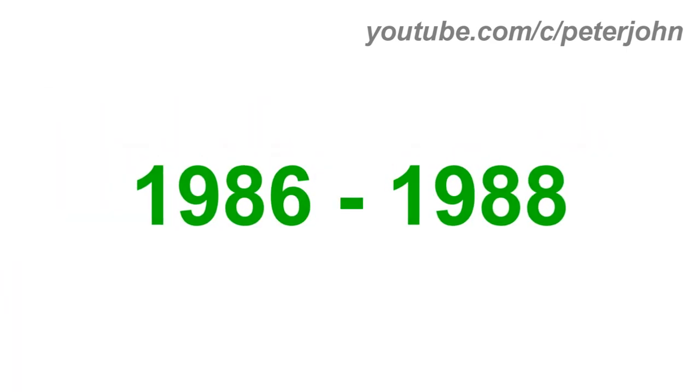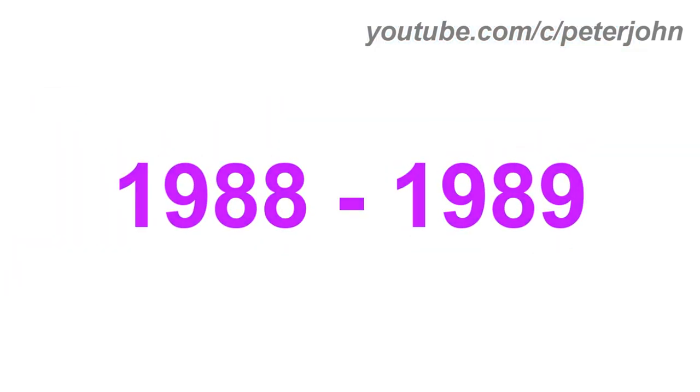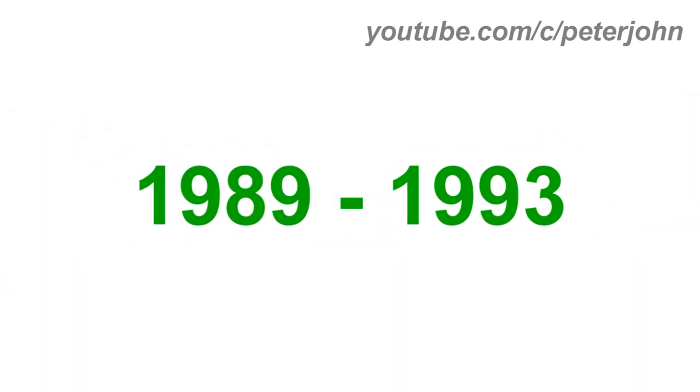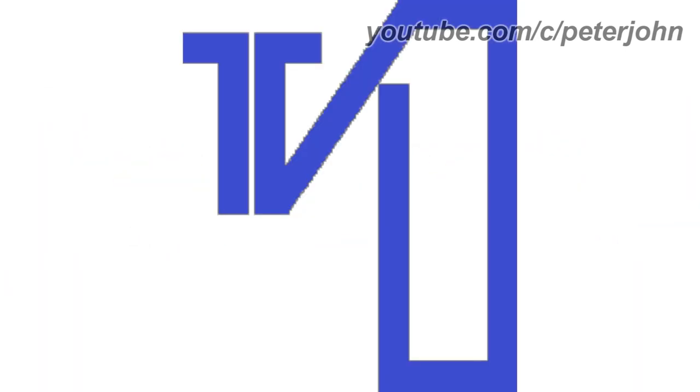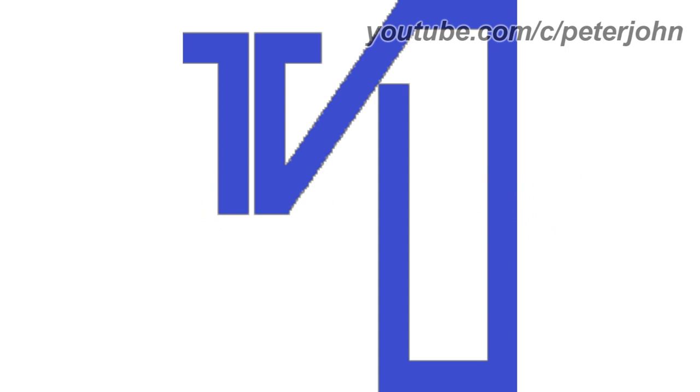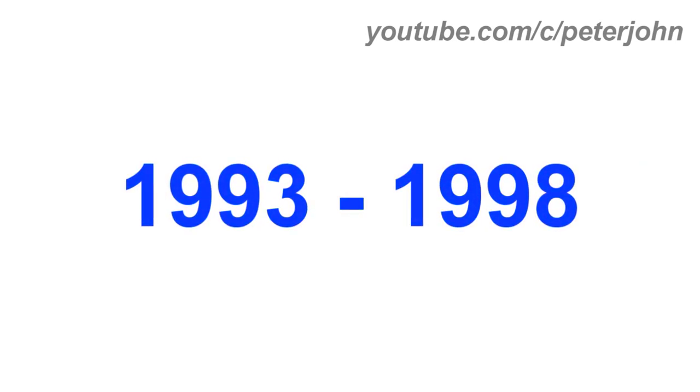1986 to 1988: here we have the logo of the second TRT1's name, TV1. There is the word TV1 in blue text. 1988 to 1989: unfortunately, I wasn't able to find this logo. 1989 to 1993: there is the word TV in blue text, and on the right of it there is a blue number 1.